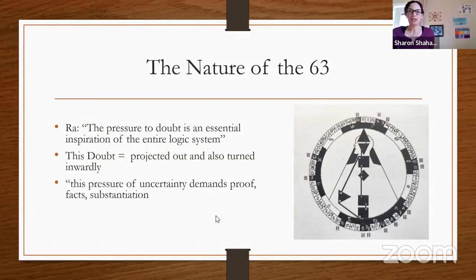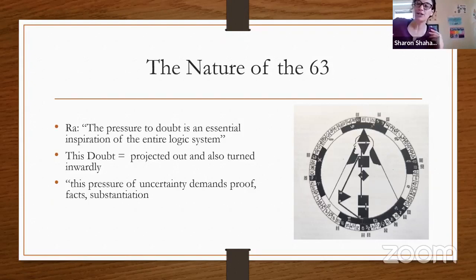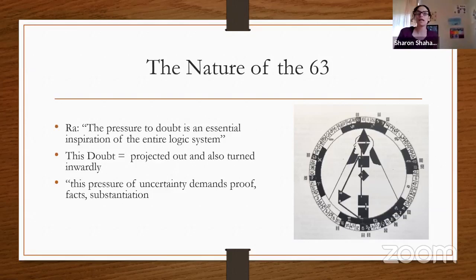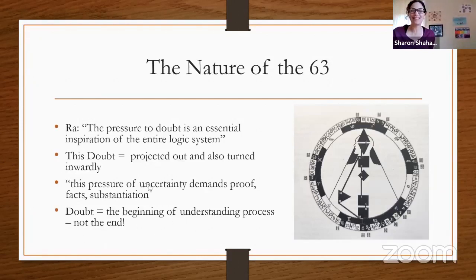Ra says this pressure of uncertainty demands proof, fact, and substantiation. The doubt from the 63 is about asking whether or not you have proof. This is a place where you demand proof, you demand facts, you demand substantiation. The doubt should only be the beginning of the understanding process, not the end.